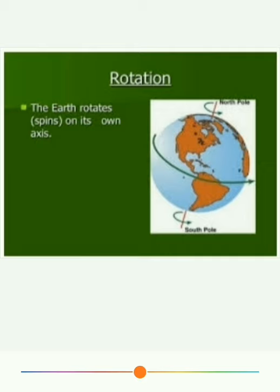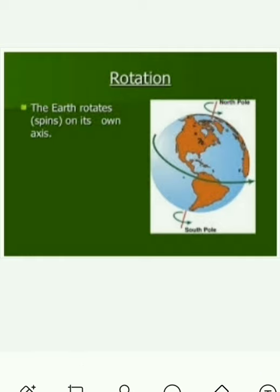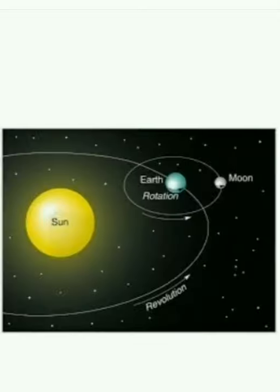Observe the picture. Here, the Earth rotates continuously on its axis from west to east. This is called rotation. The Earth also revolves around the Sun along its orbit. This is called revolution.